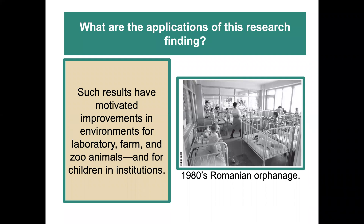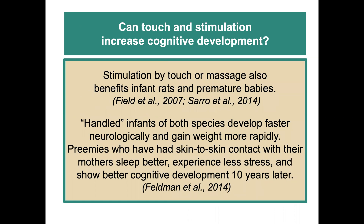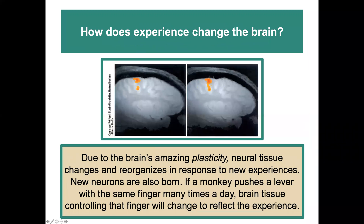The results from these studies and many others have motivated improvements in environments for lab, farm, and zoo animals — and especially for children in institutions. Research has shown the importance of an enriched environment for infants and young children. Touch and stimulation also increase cognitive development: massage benefits infant rats and premature babies. Handled infants of both species develop faster neurologically, gain weight more rapidly, and preemies who have had skin-to-skin contact with their mothers sleep better, experience less stress, and show better cognitive development 10 years later.